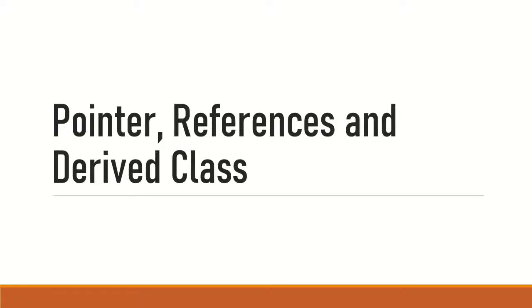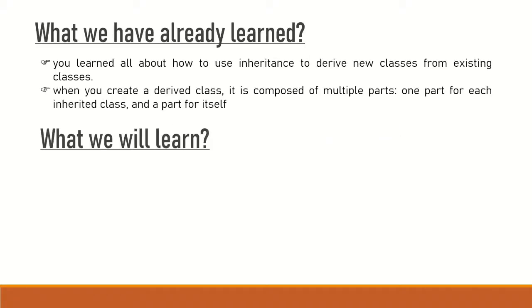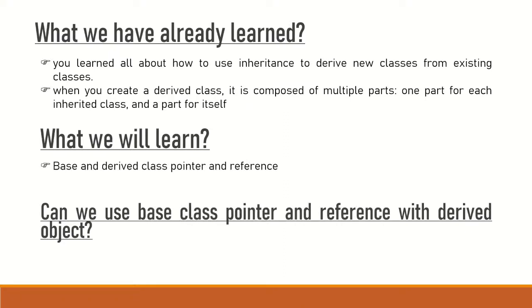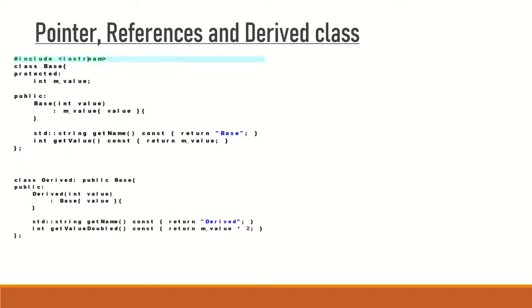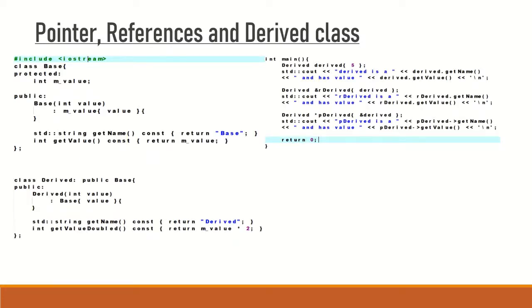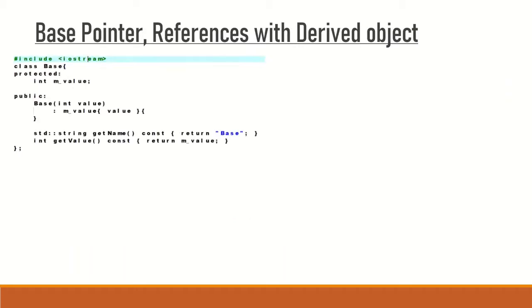Welcome back. This lecture is a continuation of the previous lecture where we discussed derived class references and pointers, and how they can access the base class member functions. One very important concept of inheritance is that a base class pointer and base class reference cannot access a derived class object, but it can access the base part of the derived class object.